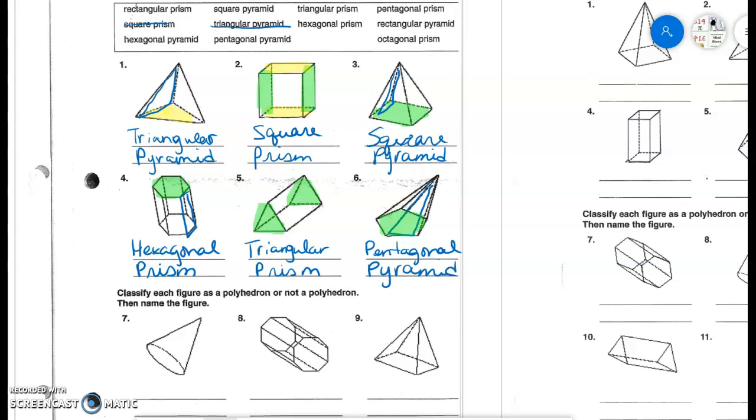Then we have something called a polyhedron. So a polyhedron is going to have straight edges. So essentially a not a polyhedron is going to be anything that is curved.